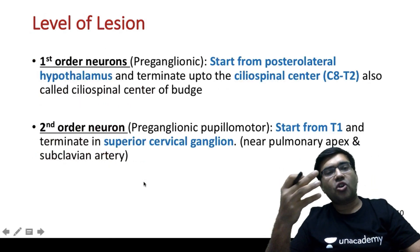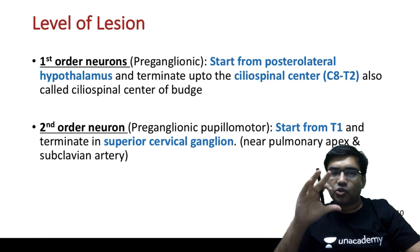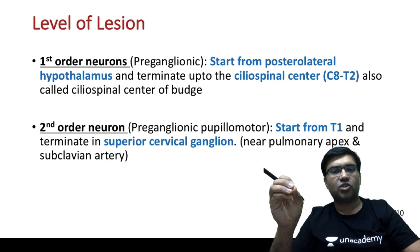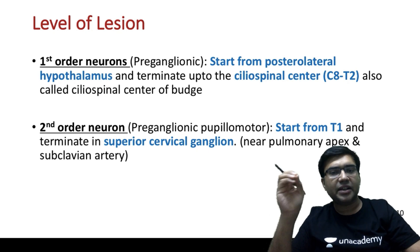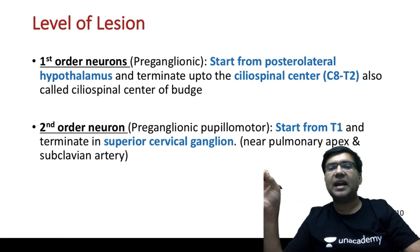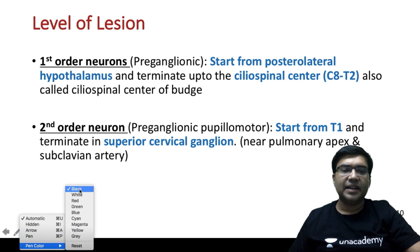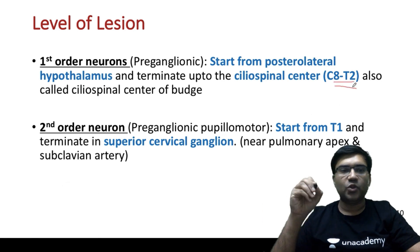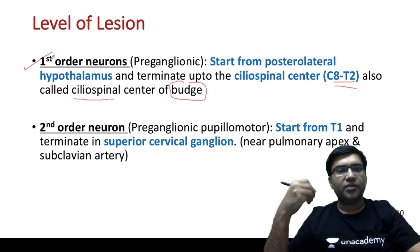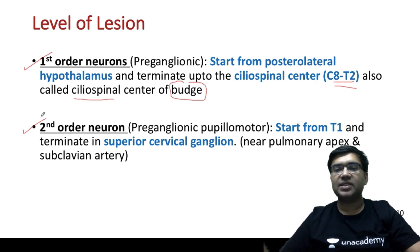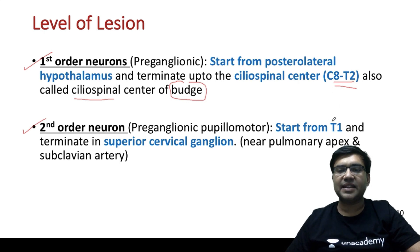Horner syndrome can occur at various levels of the sympathetic pathway. We have first order, second order, and third order neurons. The first order neurons, which we call preganglionic neurons, start from the posterior lateral hypothalamus and terminate at the ciliospinal center, which is at the level of C8 to T2 — also called the ciliospinal center of Budge. The second order neurons, which I call preganglionic pupillomotor neurons, start from the ciliospinal center of Budge at T1 and terminate in the superior cervical ganglion.